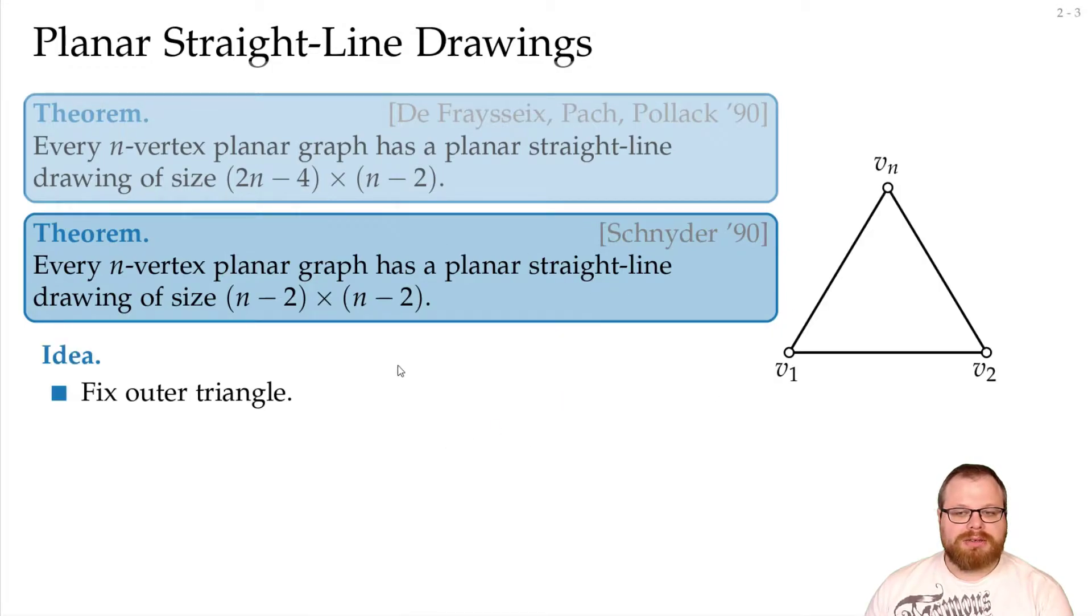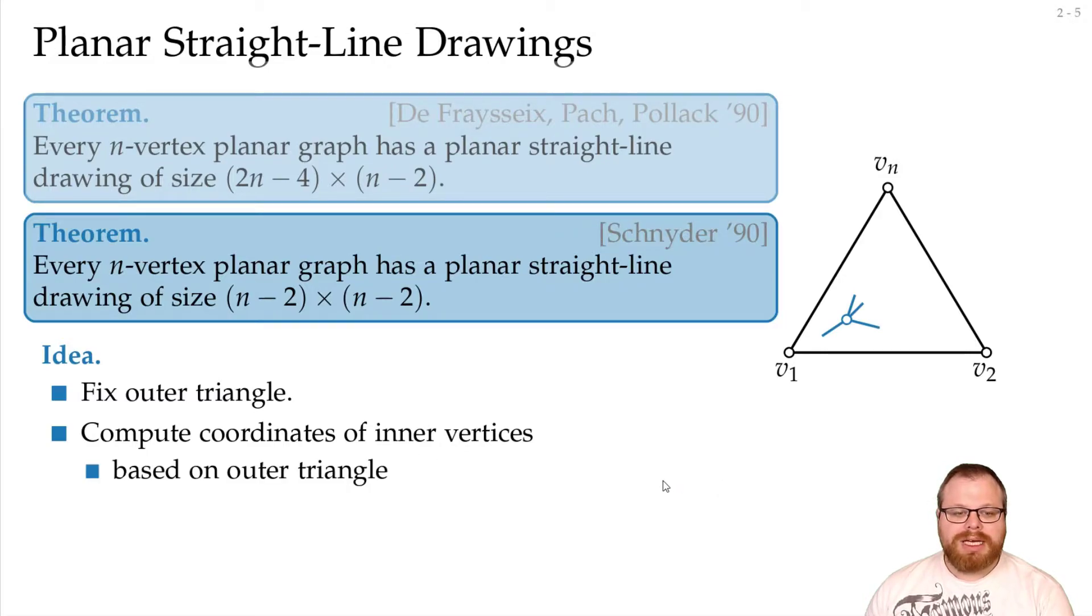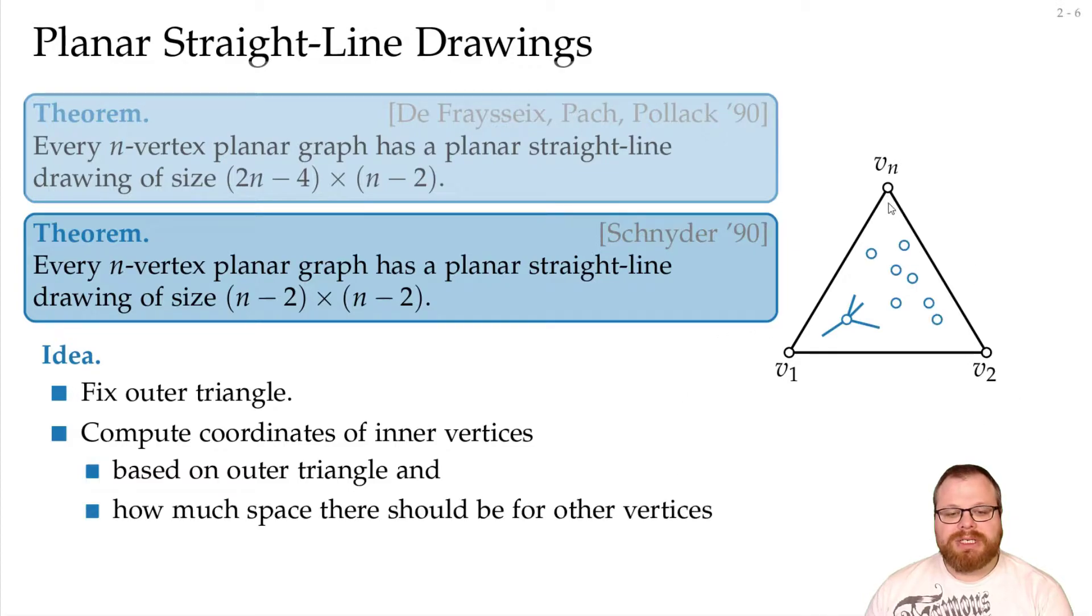The idea of the drawing algorithm is as follows. We fix an outer triangle of a triangulation. And then we want to compute coordinates for the inner vertices, based on the outer triangle and how much space we need for the other vertices. And we want to do that with so-called weighted barycentric coordinates.